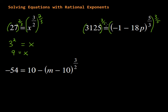And then I just go ahead and do those calculations. So the fifth root of 3125 is five, and then we've got five to the third power sitting there. And five to the third power is 125, so I'm just going to go over here, 125. And that's equal to the parentheses are gone, the exponent's gone, and we have negative 1 minus 18p.